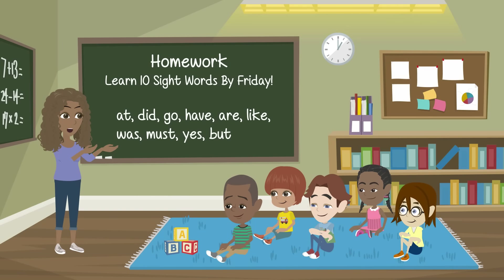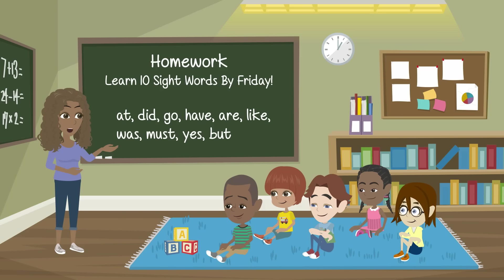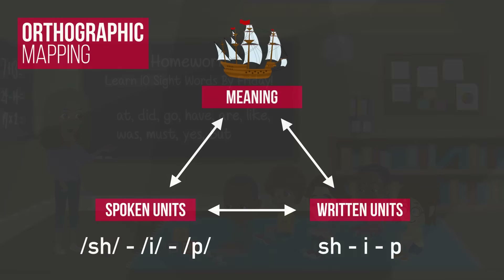We begin by looking at what happens in a non-code-based classroom. Here, early reading instruction will focus primarily on what is commonly referred to as sight word instruction. Beginning in kindergarten, students will be assigned a list of whole words to memorize. Here is an example of whole words a kindergartener may be assigned. Every week or so, students will be quizzed to see if they successfully memorize the words.